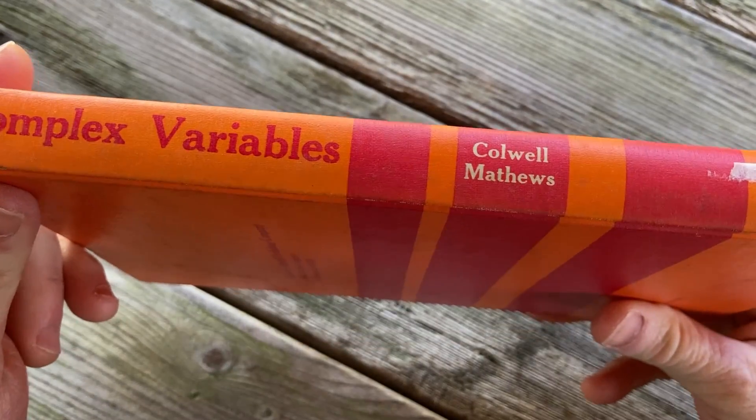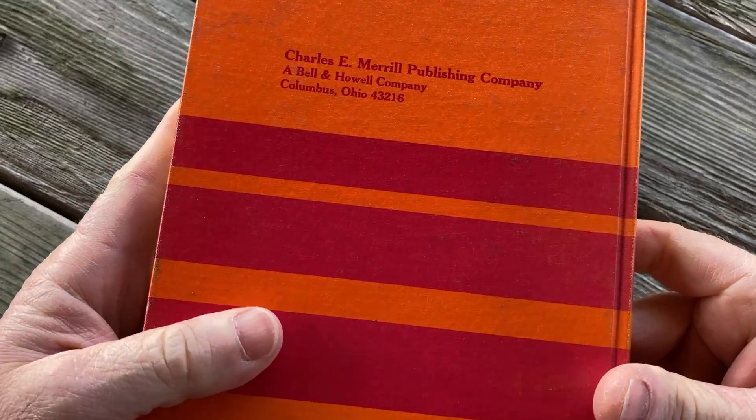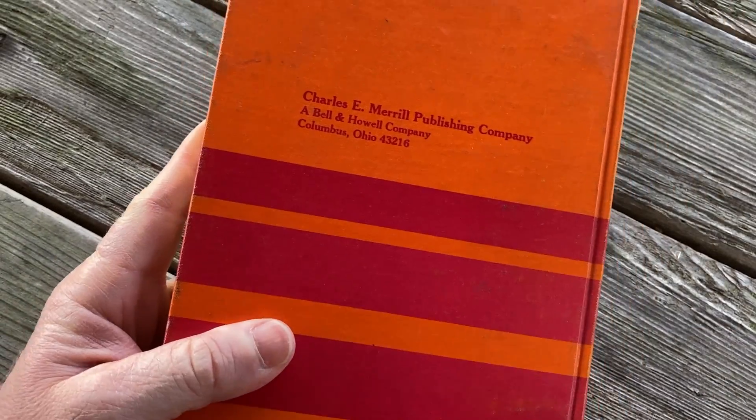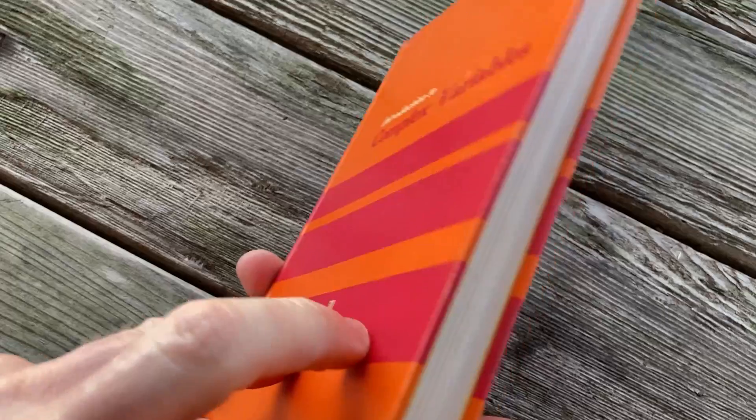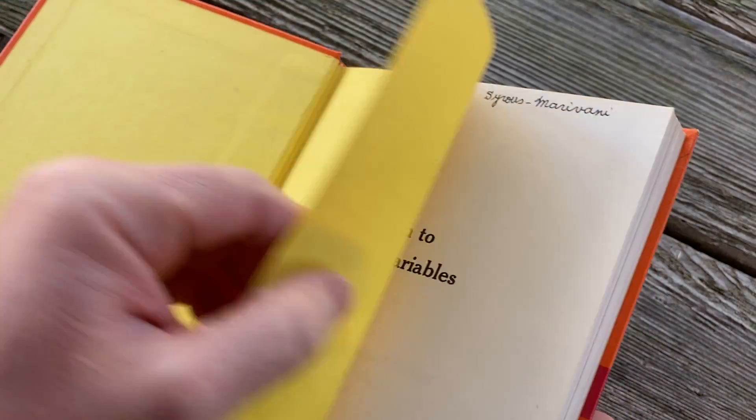It's called Complex Variables by Caldwell and Matthews. It's an older book, as you can see. Charles E. Merrill Publishing Company. I wonder if that still exists. This is a really old book. It's all yellow here. It's got someone's name there. I don't know who that is.